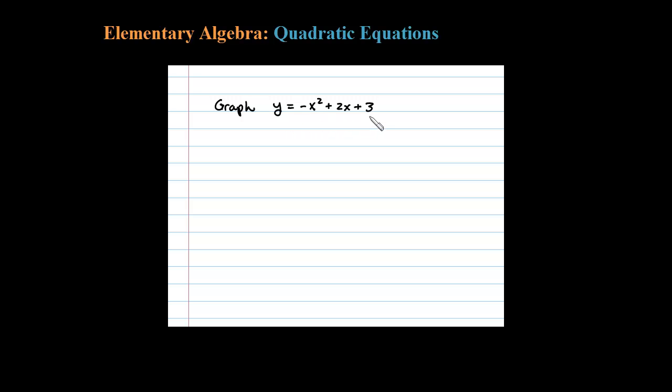Here I'm asked to graph this quadratic function. Quadratic functions graph as parabolas. I always like to find the y-intercept first—that's the easiest point to find. In this case, when x is 0, the corresponding y-value is 3. Notice the leading coefficient is negative.